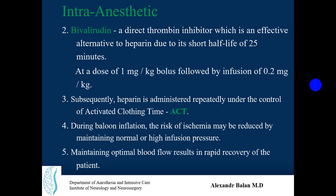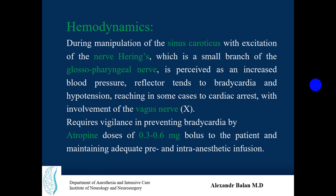An alternative anticoagulant is bivalirudin, a direct thrombin inhibitor that is an effective alternative to heparin due to its short half-life of 25 minutes. Heparin has a half-life of one hour, so ACT must be re-measured after one hour and additional doses given as needed. During balloon inflation, maintaining normal or elevated infusion pressure with crystalline solution helps reduce ischemia risk and supports rapid patient recovery with decreased risk of delirium.